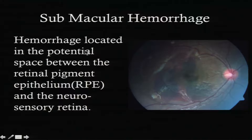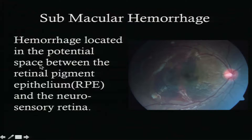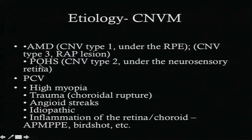Submacular hemorrhage is basically the presence of blood in the potential space between the neurosensory retina and the retinal pigment epithelium. We come across this quite often nowadays, especially in cases of PCV.